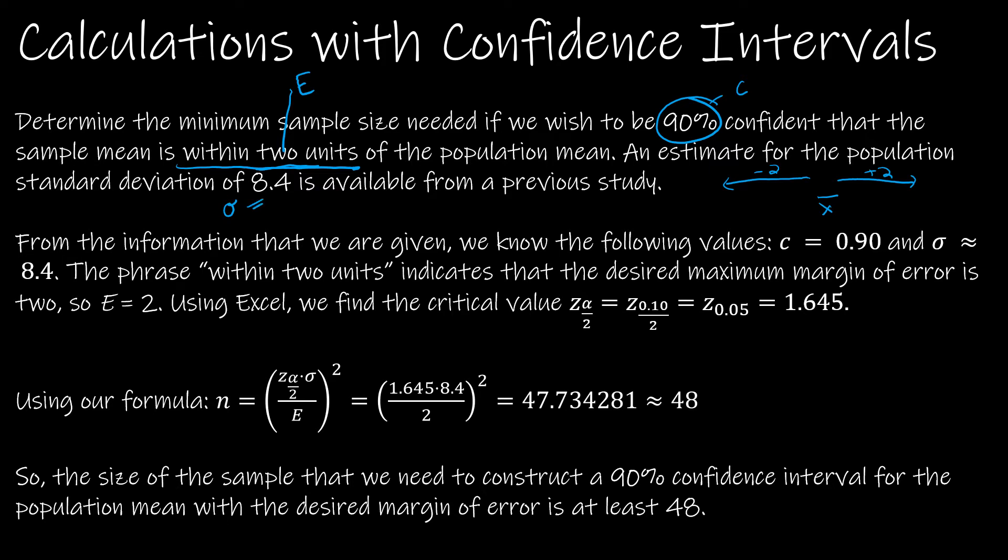This is C, which doesn't tell us much because notice there's no C in this equation. But we know that the confidence level is 90% and the population standard deviation or sigma is 8.4. So the only thing that is not given to us that we have to do a little bit of work for is what is the critical value.